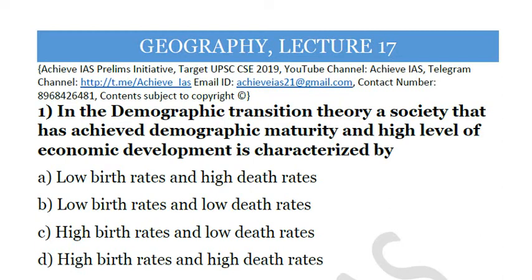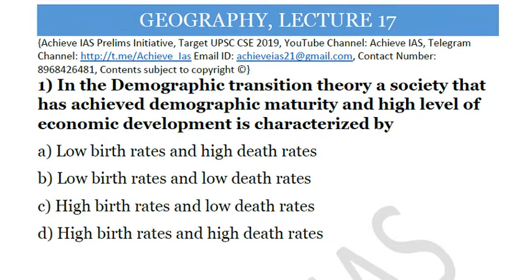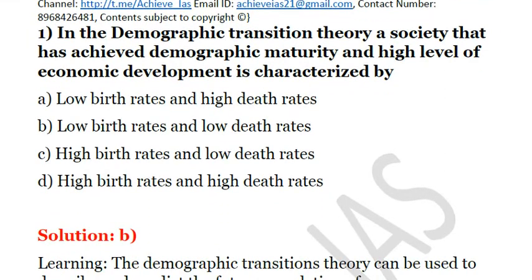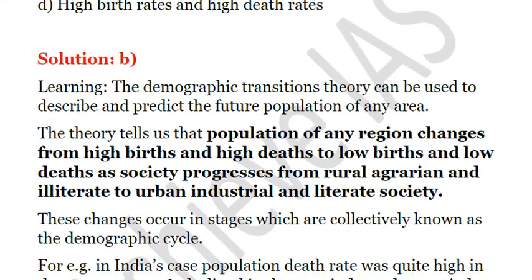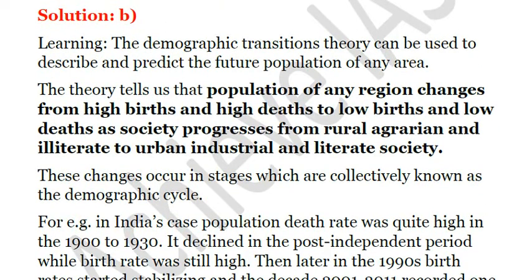Initially, both death rates and birth rates are high. Then slowly the death rate declines but the birth rate remains high. In the later stage, birth rate also starts declining and death rate is also low. That stage is called the mature stage of demographic transition. The demographic transition theory can be used to predict the future population of any area.